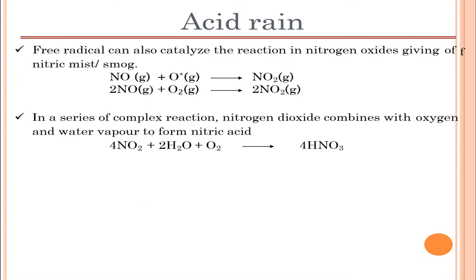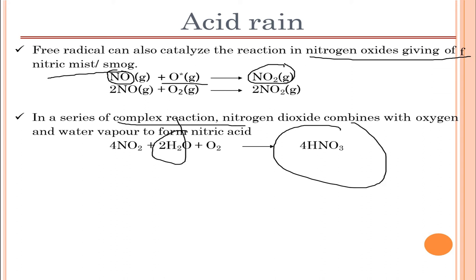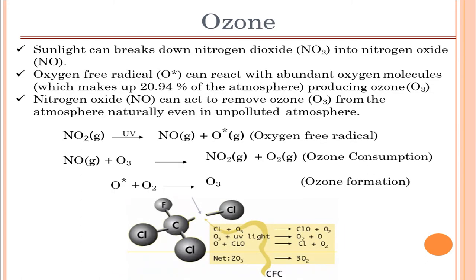Free radicals can also catalyze reactions with nitrogen oxide by giving off nitric oxide. Nitrogen oxides plus oxygen leads to formation of nitrogen dioxide, and when nitrogen dioxide combines with water and oxygen it forms nitric acid. In a series of complex reactions, nitrogen dioxide combines with oxygen and water vapor to form nitric acid.